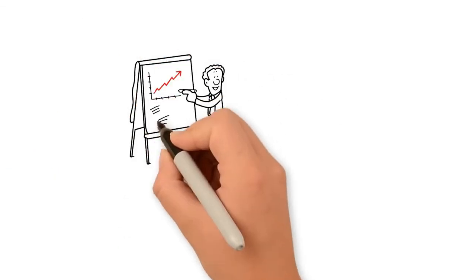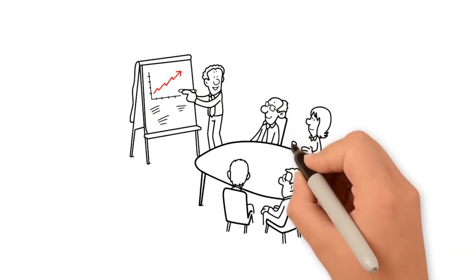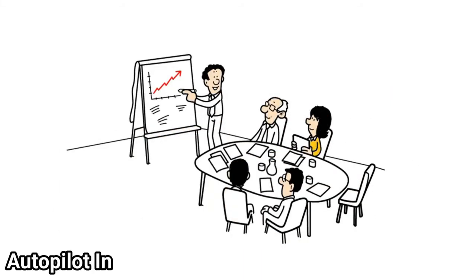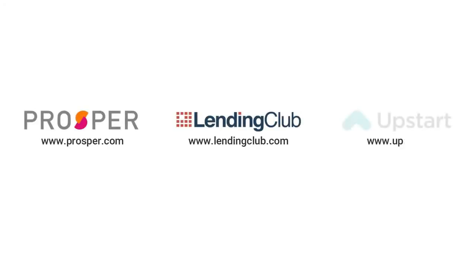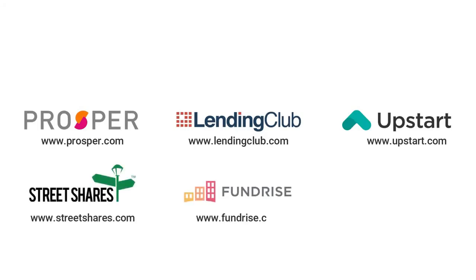Many of the companies on this list allow you to manually choose the loans you invest in or pick an autopilot investment strategy based on your financial goals. Lendingclub.com, prosper.com, upstart.com, streetshares.com, fundrise.com, fundingcircle.com.